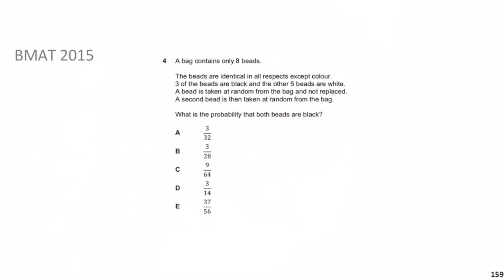There's a bag containing eight beads — identical in all respects except colour. Three are black and five are white. A bead is taken at random from the bag and not replaced. A second bead is then taken at random. What is the probability that both beads are black? Pause the video for a minute, then we'll go through the solution.